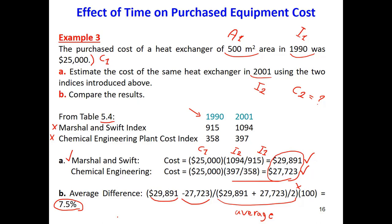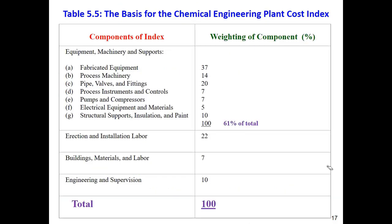Now we'll consider an example that combines both the effect of capacity and the effect of time. For instance, if you're asked for the price of a heat exchanger with an area of 1,000 square meters in 2001, you would first use the cost already calculated for that year, then apply an additional step to account for the capacity effect using the ratio A2 over A1, raised to the 0.6 power exponent.